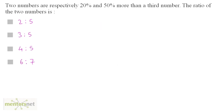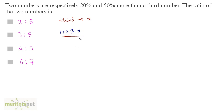Two numbers are respectively twenty percent and fifty percent more than a third number. The ratio of the two numbers is? Let the third number be x. The first number is twenty percent more than the third number, which is 120% of x. The second number is fifty percent more than the third number, which is 150% of x.